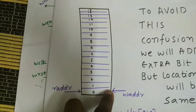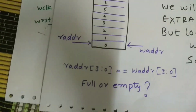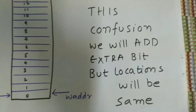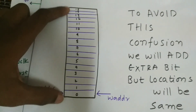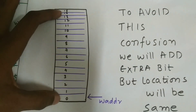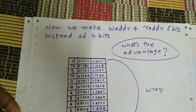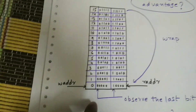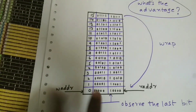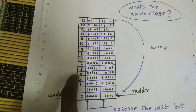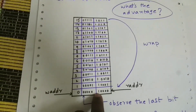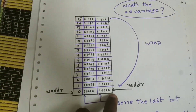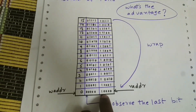Making the write and read addresses five bits wide, we start at binary zero and increment. When we wrap around past the top, the five-bit value becomes 10000 — the MSB changes. If the read pointer is still at 00000 and the write pointer is at 10000, the MSB difference tells us the FIFO is full. This distinguishes full from empty. The full condition is when the MSB of the write address is not equal to the MSB of the read address, and the empty condition is when all bits including the MSB are equal.